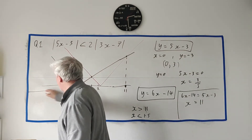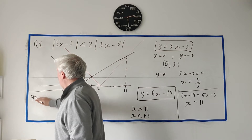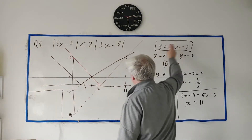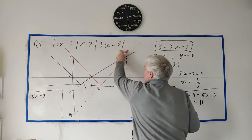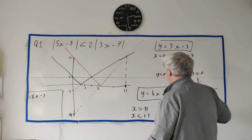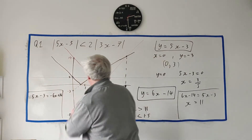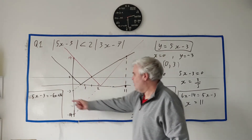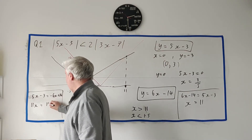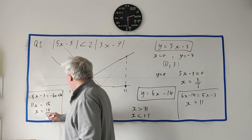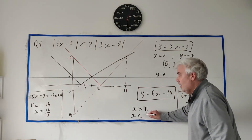For the other intersection, we need the positive version of the left line, y equals 5x minus 3, equated with the bounced (negative) version of the right line, which is minus 6x plus 14. Setting 5x minus 3 equal to minus 6x plus 14, we bring 6x over to get 11x, and bring 3 over to get 15. So x equals 15 over 11, which is about 1.36 — between 1 and 2 — and that's about right.